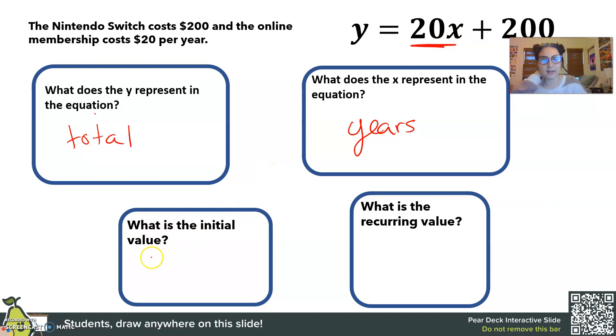My initial value, well, first I have to buy the Nintendo Switch before I can buy the membership. So it's going to cost me $200 just to buy it first. That's my starting point. The recurring value, well, I pay $20 over a course of however many years. So that's going to happen more than once. So the recurring value is 20.